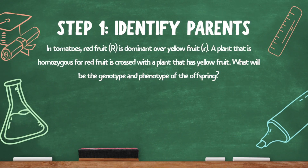Let's do a problem together. In tomatoes, red fruit (big R) is dominant over yellow fruit (little r). A plant that is homozygous for red fruit is crossed with a plant that has yellow fruit. What will be the genotype and phenotype of the offspring? The first step in solving a Punnett square question is to identify the genotype of each parent. We have one parent that is homozygous for red fruit.